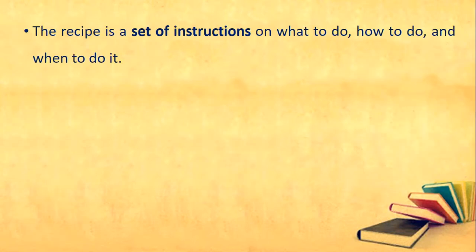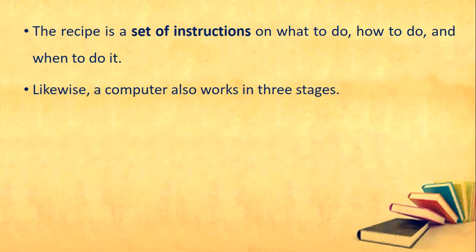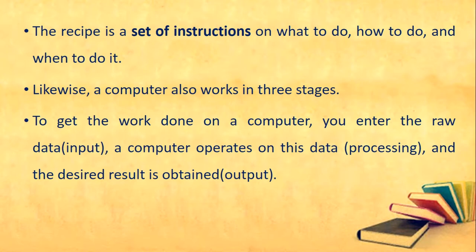A recipe is a set of instructions on what to do, how to do it, and when to do it. Likewise, a computer also works in three stages. To get work done on a computer, you enter the raw data — that is input. The computer operates on this data — that is processing. The desired result is obtained — that is output.